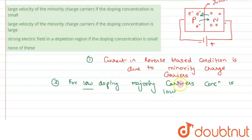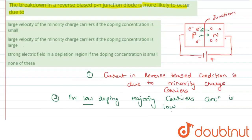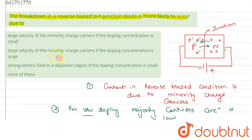The conditions necessary for breakdown are low doping and large velocity of minority carriers. This breakdown is also termed avalanche breakdown. As per the options given, large velocity of the minority charge carrier when the doping concentration is small — this answer is correct.